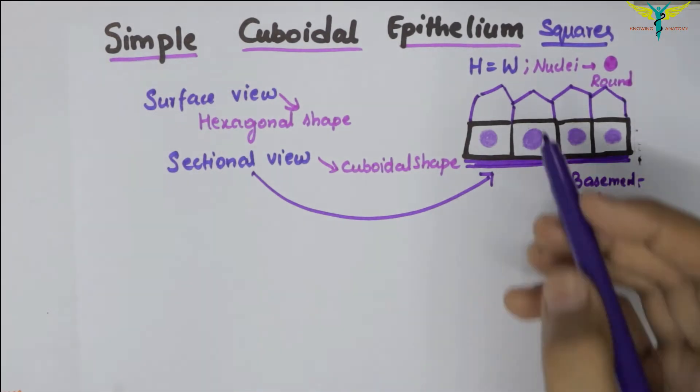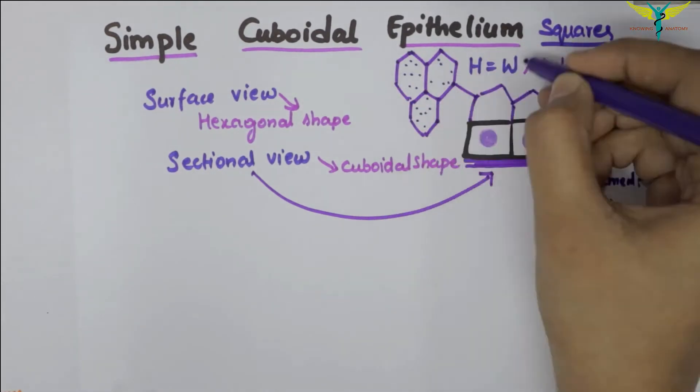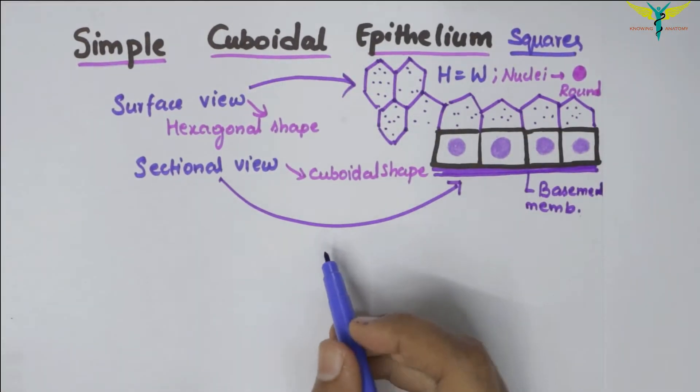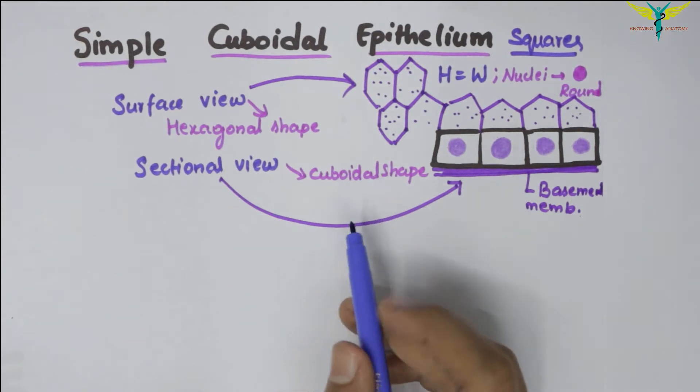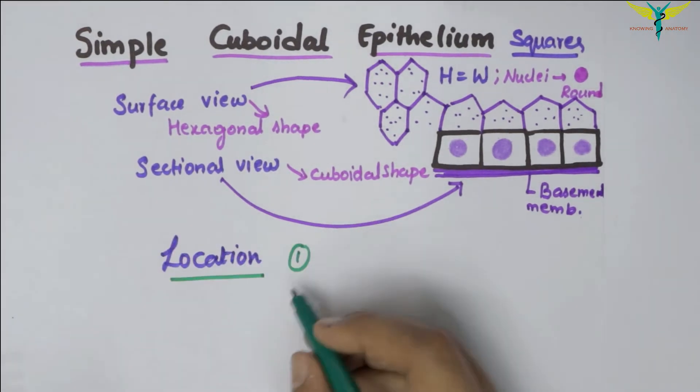This is the sectional view of a cuboidal epithelium, and the surface view is in hexagonal shape. Now let's talk about the location of the simple cuboidal epithelium.